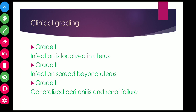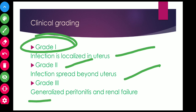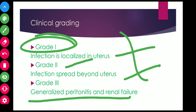Clinical grading is divided into Grade 1, Grade 2, and Grade 3. In Grade 1, infection is localized in the uterus only. In Grade 2, infection spreads beyond the uterus to the parametrium, tubes and ovaries, and pelvic peritoneum. In Grade 3, there is generalized peritonitis, renal failure, and even endotoxic shock.